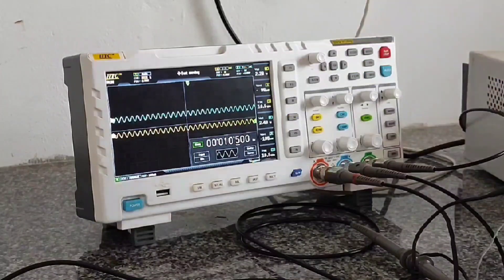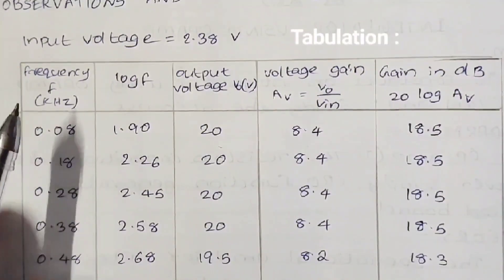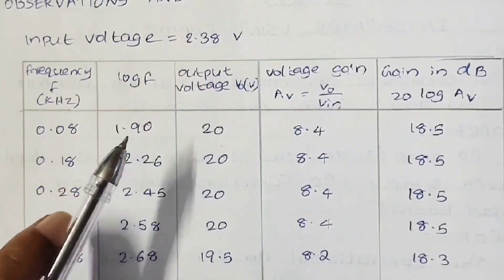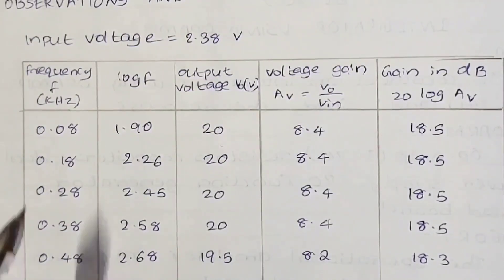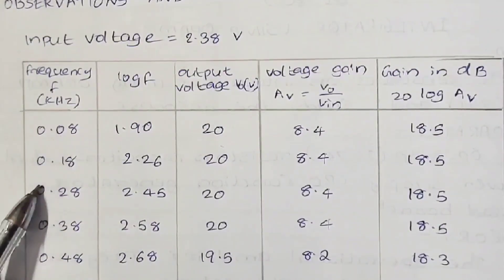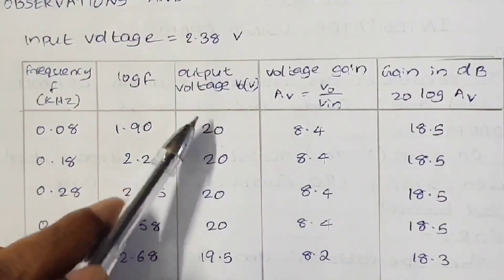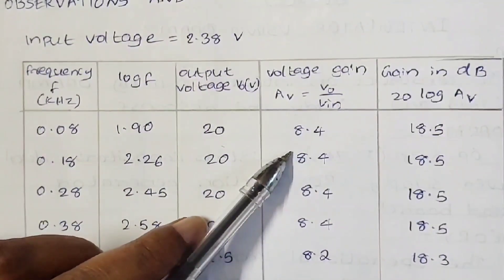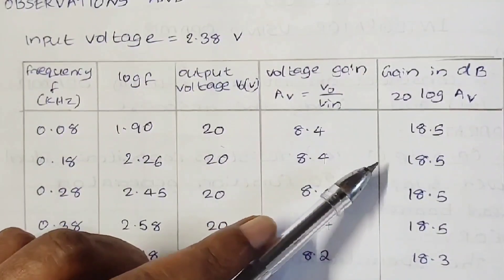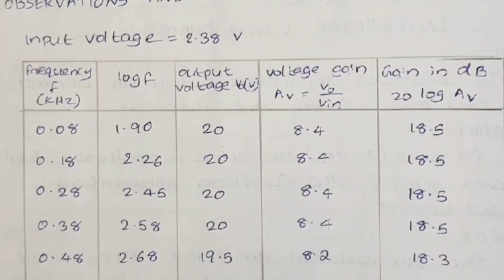The 0 dB gain corresponds to the FB value of 10 kilohertz. The tabular column has the input voltage set at 2.38 volts in this experiment. The table consists of 5 columns: the first records input frequency in kilohertz or hertz; the second records the log of that frequency; the third records the output voltage measured from the DSO; the fourth records the gain using the formula A = V_output by V_input; and the last records the gain in dB using the formula 20·log(A).